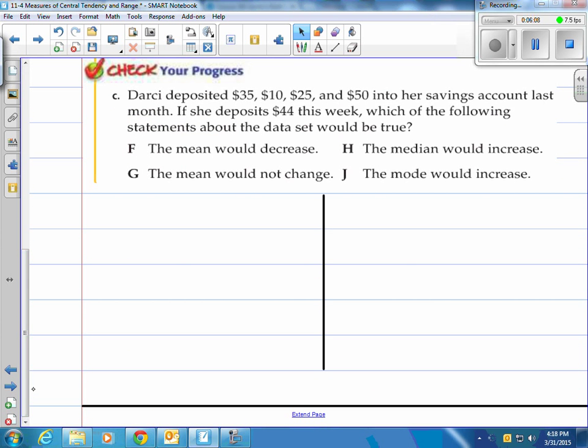All right, you give it a shot. Come on back, see how you did. Darcy deposits $35, $10, $25, and $50 into her savings account last month. If she deposits $44 this week, which of the following statements about the data set would be true?